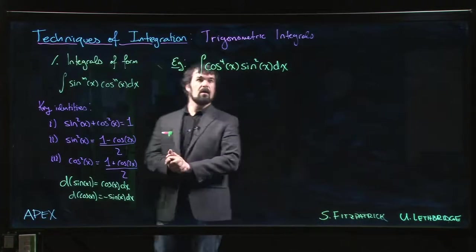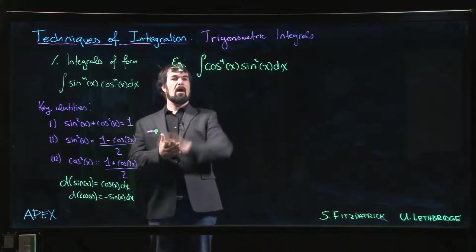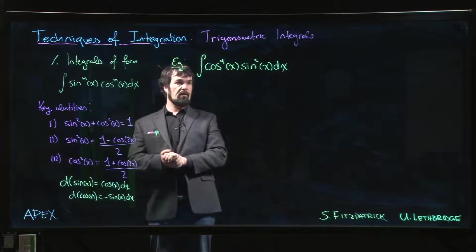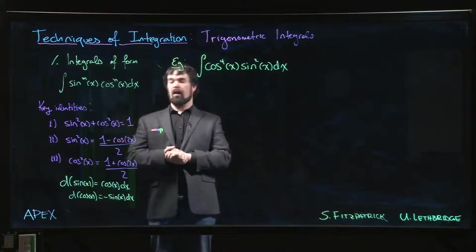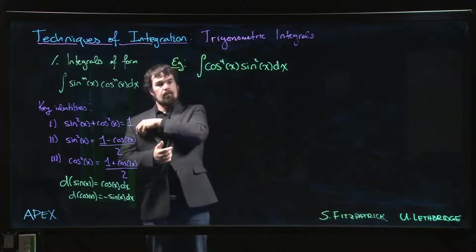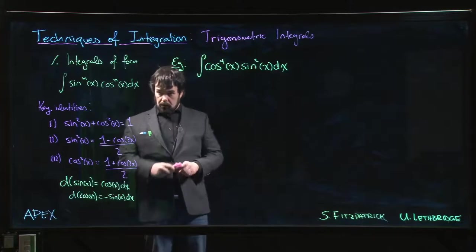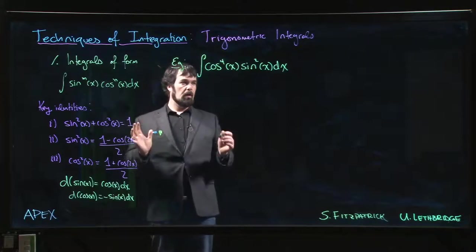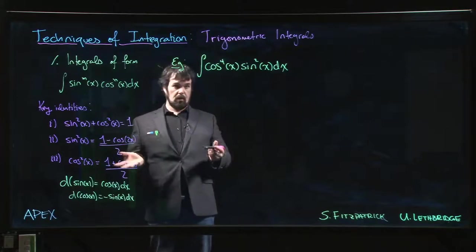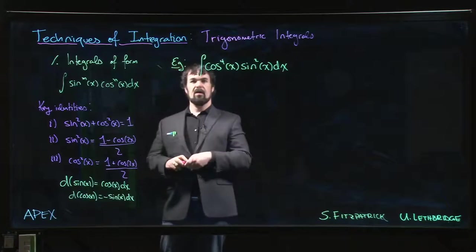So now we're going to look at what you do if both powers are even. We have cosine to the fourth power, sine is squared, two even powers. What you have to do is make use of these power reduction formulas here, these half-angle formulas if you want to call them that, or double-angle formulas.